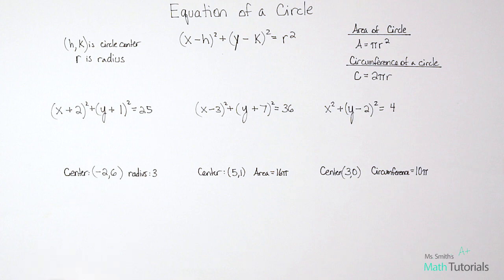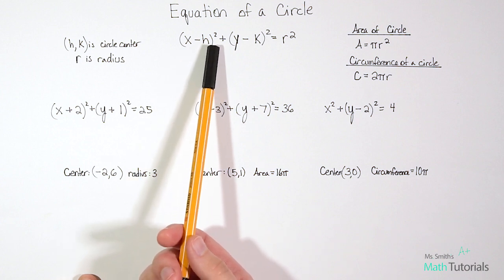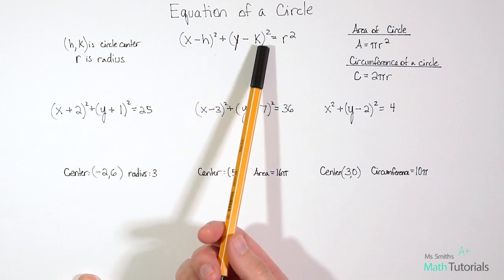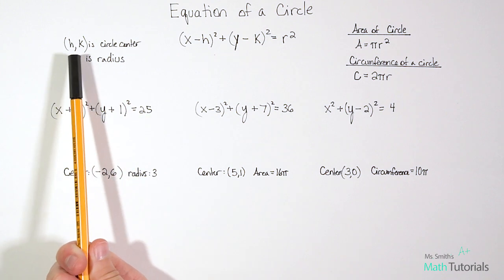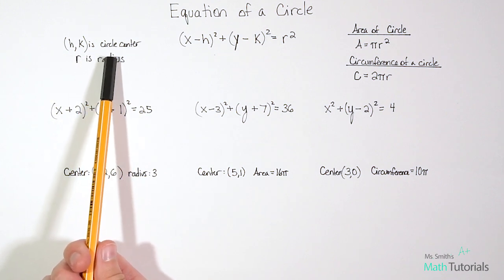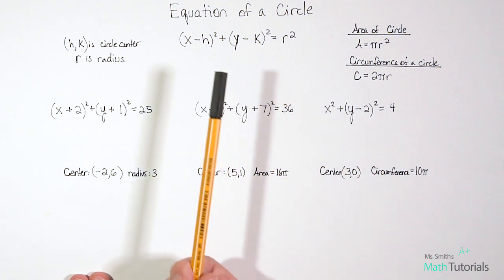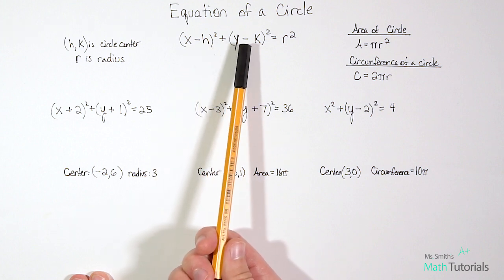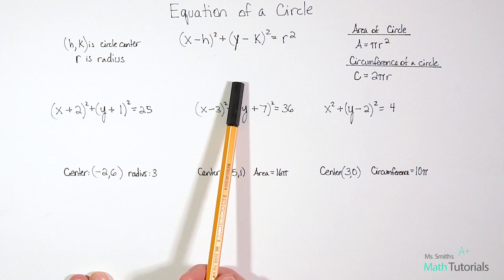I have the equation written right here. The equation of a circle in standard form is (x - h)² + (y - k)² = r². An important component to recognize is that (h, k) is the circle's center — that would be the point that falls exactly in the center of the circle.